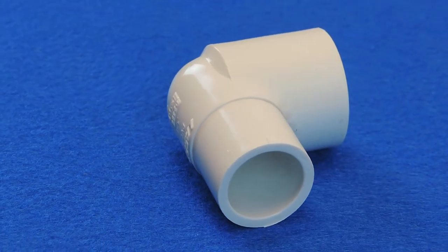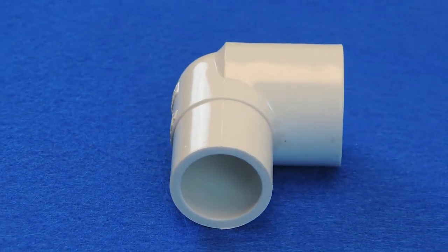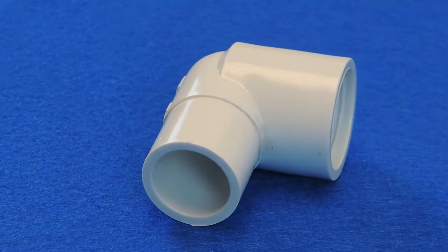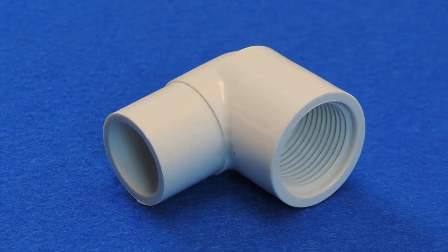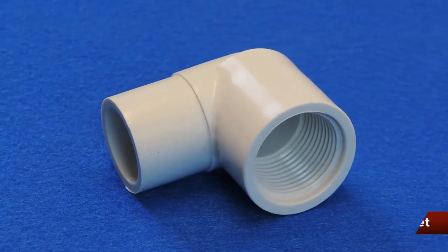For example, a three-quarter inch spig fit 90 degree elbow will allow a three-quarter inch male pipe thread to be inserted into one end and will cement or glue into a three-quarter inch fitting with a spig socket on the other end.